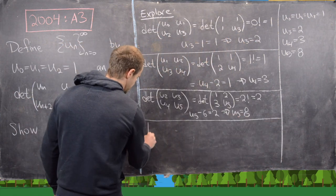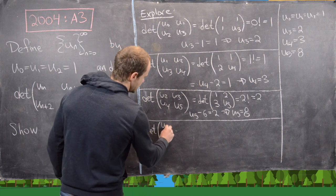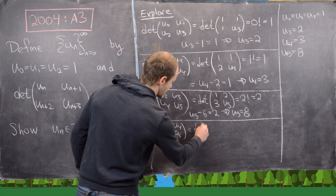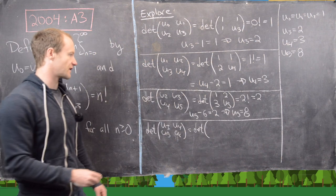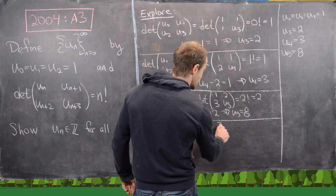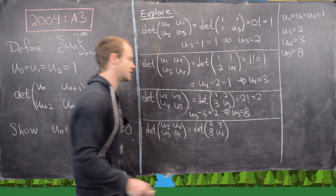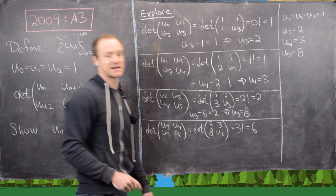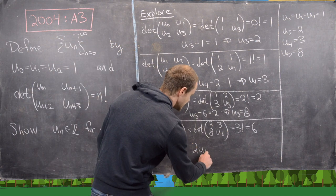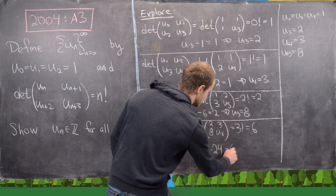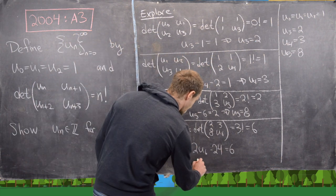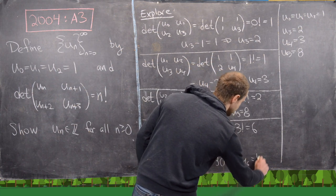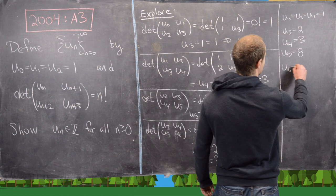Let's do another. The determinant of [u_3, u_4; u_5, u_6] equals the determinant of [2, 3; 8, u_6], and that needs to equal 3 factorial = 6. So 2u_6 − 24 = 6, which gives 2u_6 = 30, so u_6 = 15. We now have u_6 = 15.